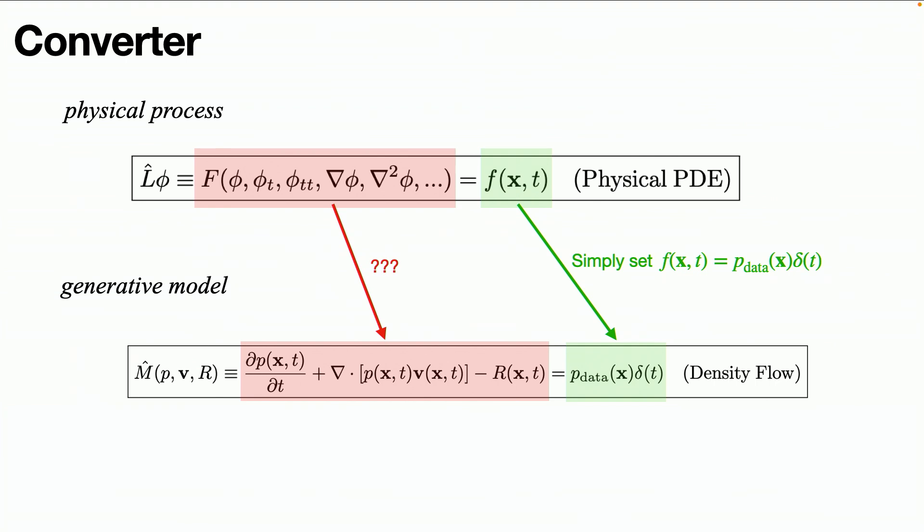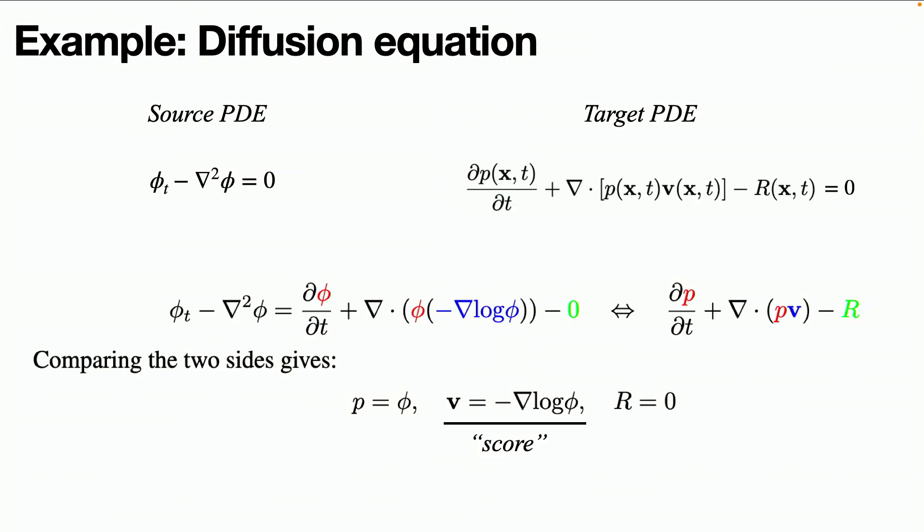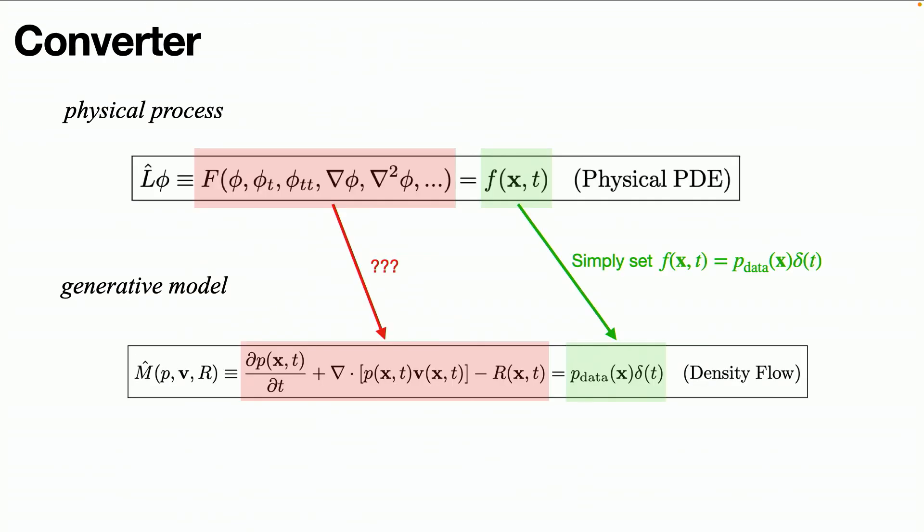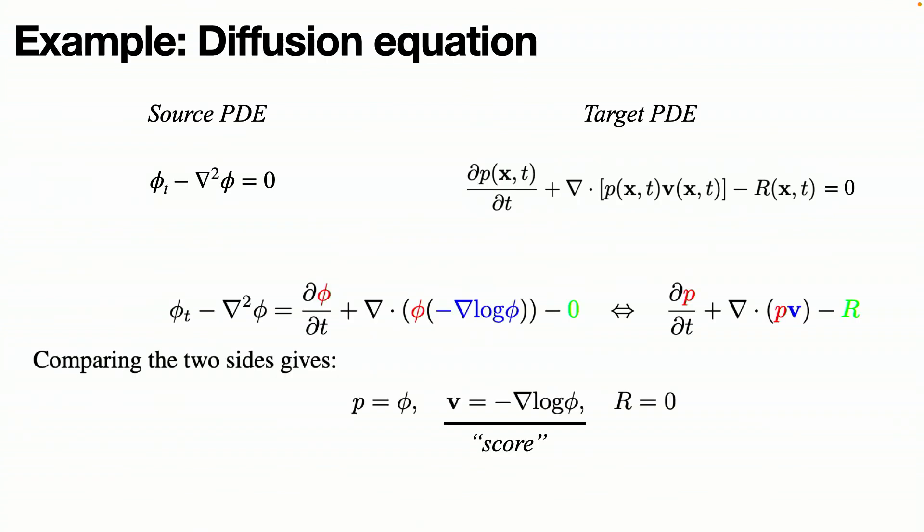To do that, we want to match both the left-hand side and right-hand side. Matching the right-hand side is easy. Matching the left-hand side is a little bit hard to have a systematic way, but in practice, we can do the construction case-by-case, and it's usually quite straightforward. I will give you some example here.